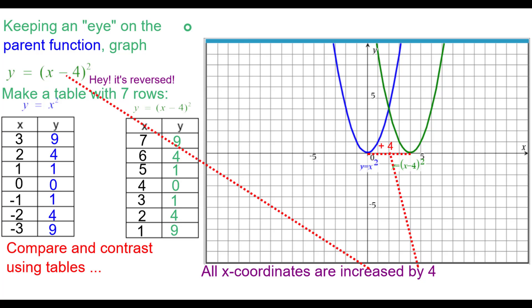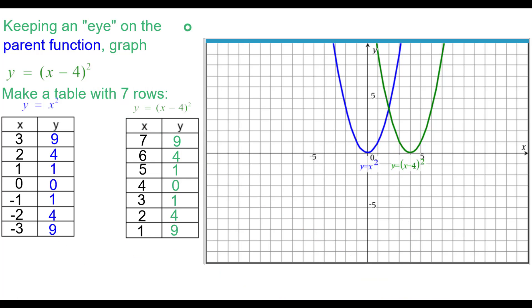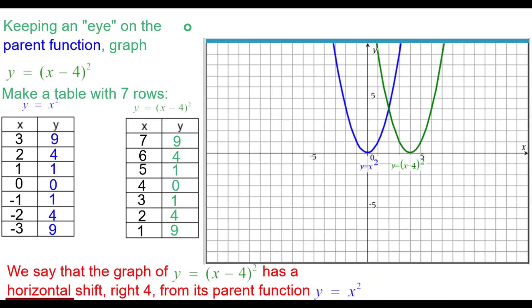It's reversed — remember that. All x coordinates are increased by 4 while the y coordinates stay the same. What we say is that the graph of y equals the quantity of x minus 4, squared, has a horizontal shift right 4 from its parent function y equals x squared.